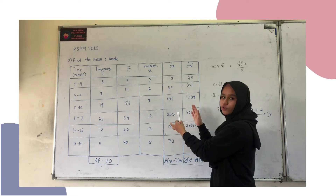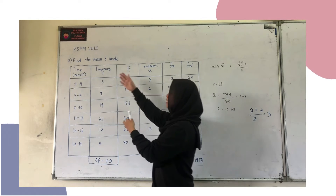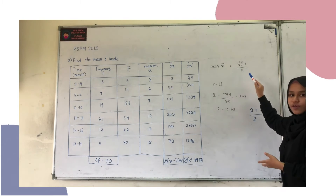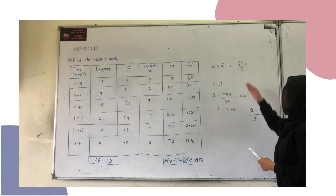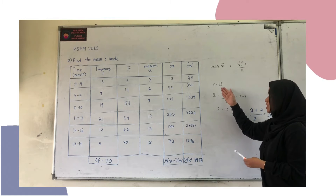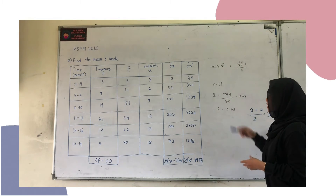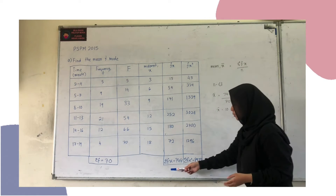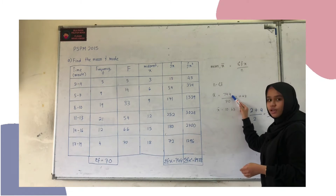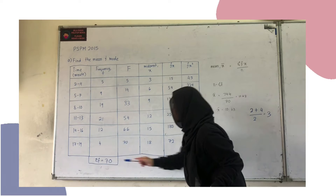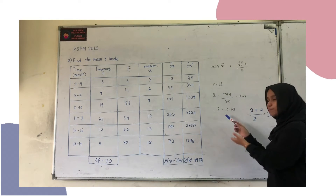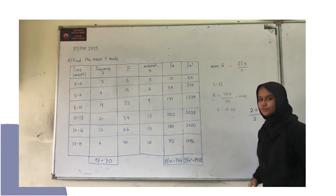After filling in all the table values, we can find the mean. The formula for mean is the sum of fx over n, where n equals the sum of frequencies. The sum of fx is 754 and the sum of frequencies is 70, so the mean equals 10.63.